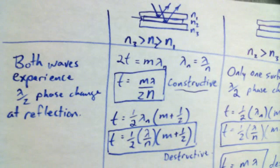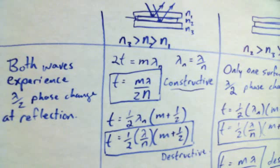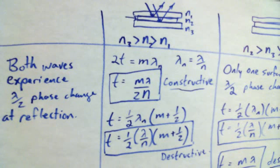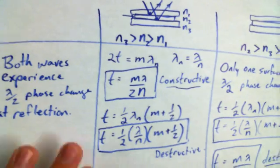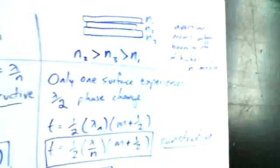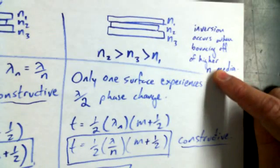Alright, so we could talk about reflecting light off of more optically dense materials and less optically dense materials. If you're reflecting light off of more optically dense material — that is, when N is greater — you're going to end up getting inversion. That means a phase shift of a half wavelength.